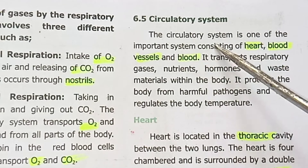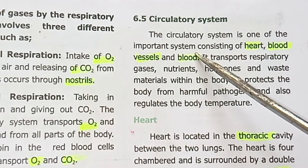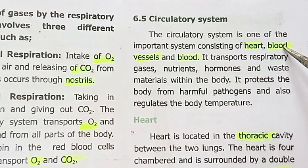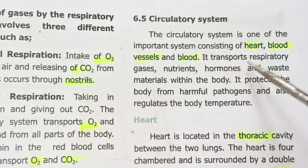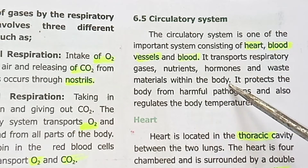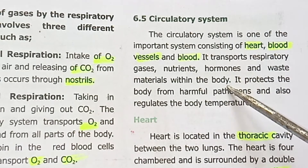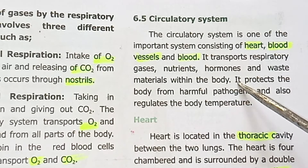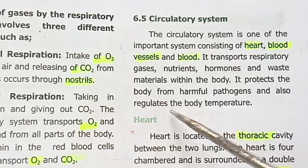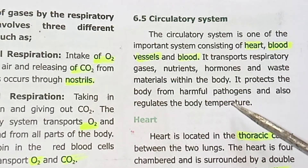Circulatory system — rattha oottam mandalam. The circulatory system is one of the important systems consisting of the heart, blood vessels, and blood. It transports respiratory gases, nutrients, hormones, and waste materials within the body. It also protects the body from harmful pathogens and regulates body temperature.